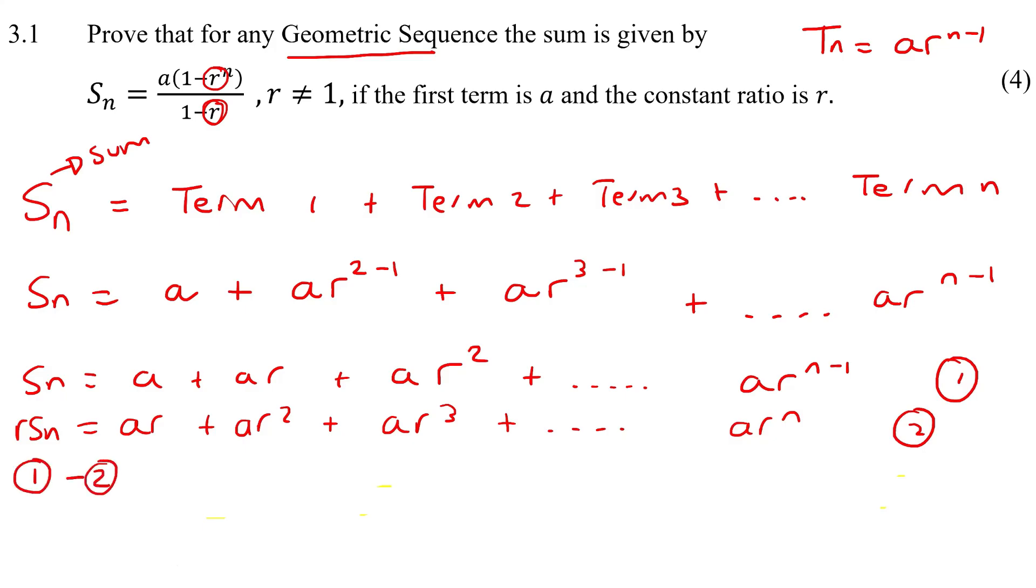And so that's going to end up giving us Sn minus rSn because I minus these two. And then I need to minus all of this. But don't worry it's pretty simple. You've got this a